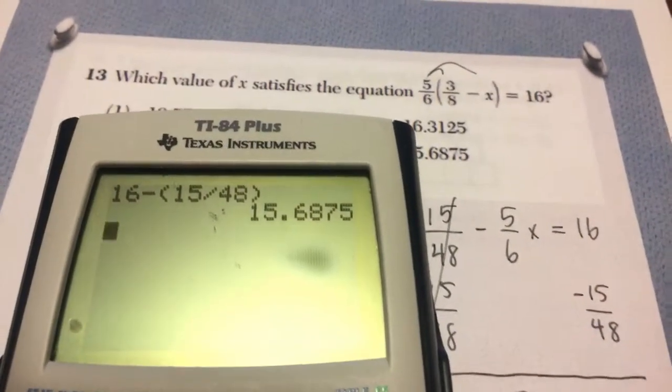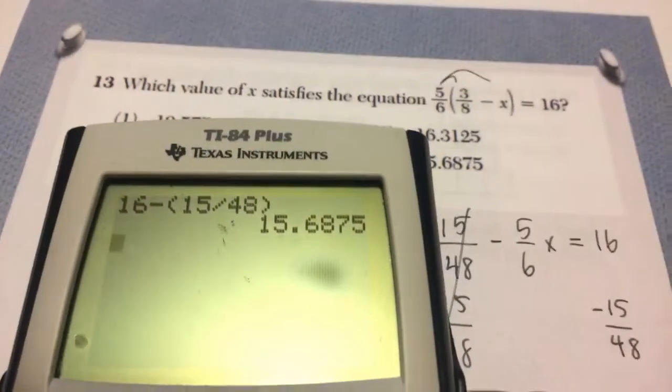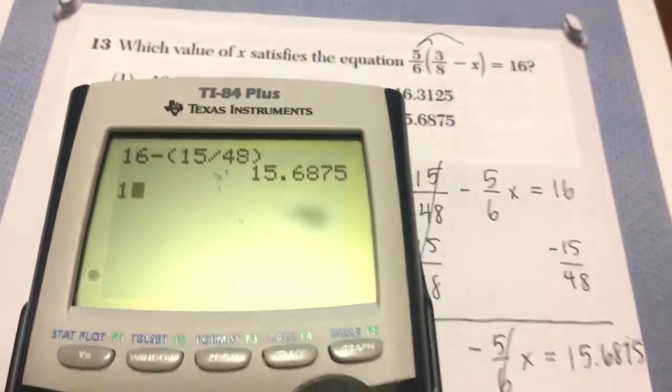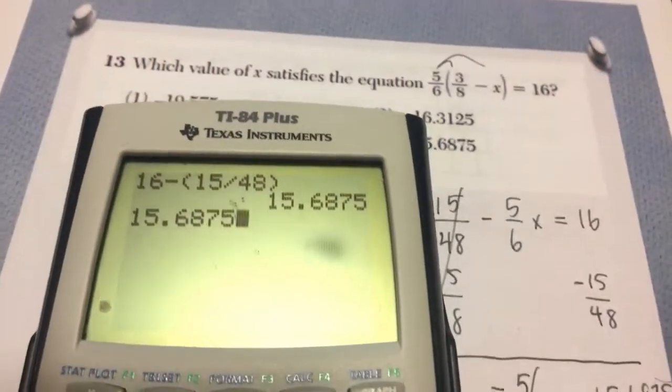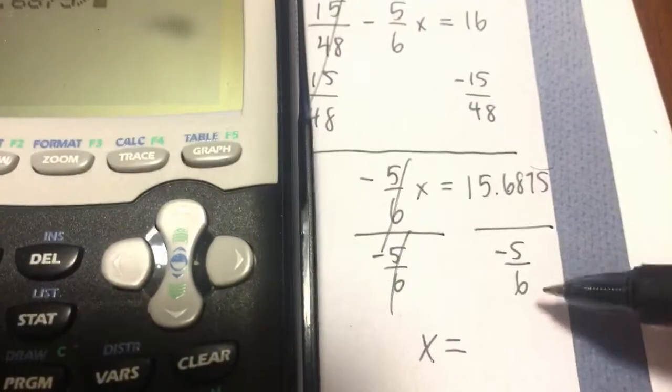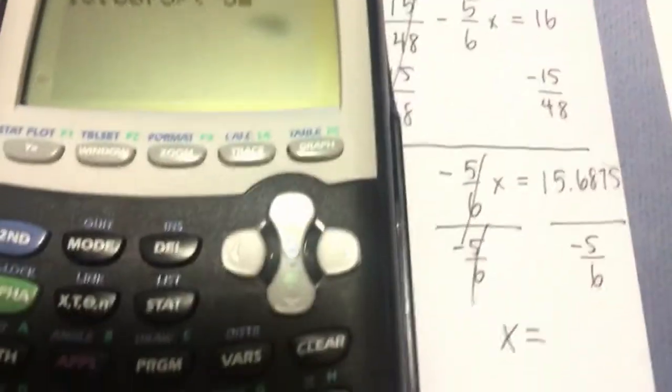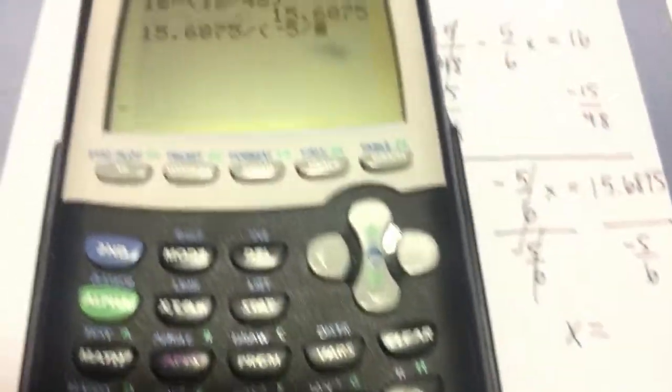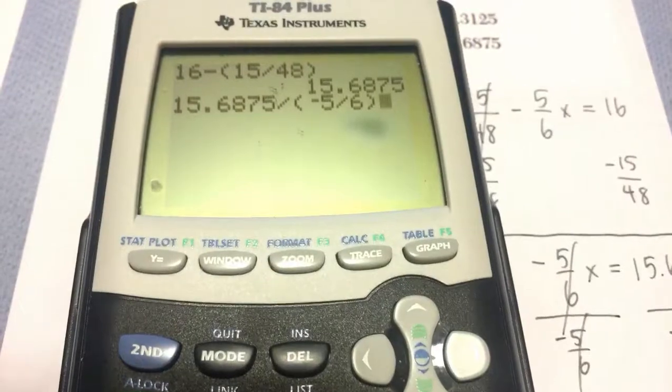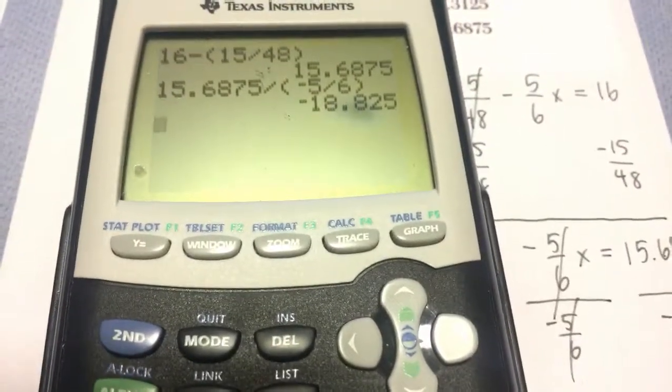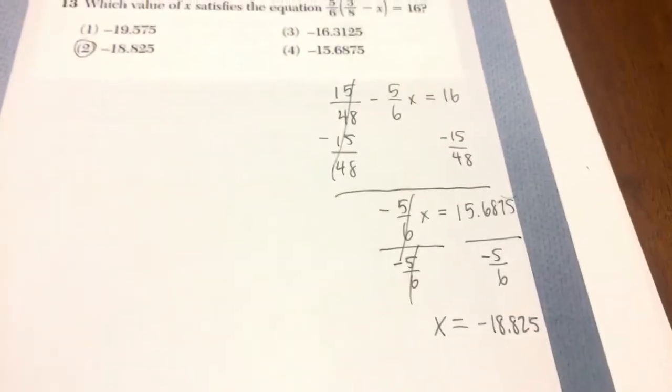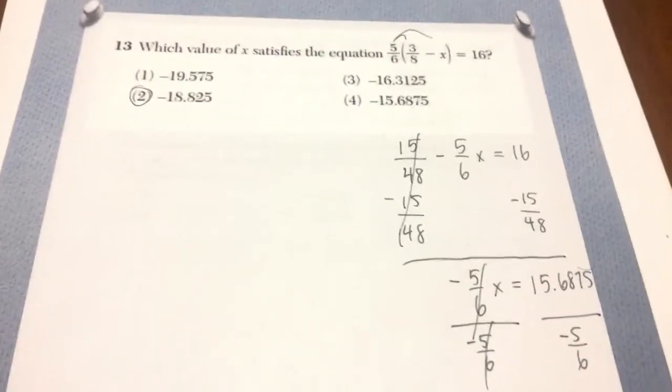Now again, if I divide by negative 5/6, I don't recommend this strategy but it is what it is. So are you ready? 15.6875 divided by, now I need to put this in parentheses. So I'm going to do parentheses, negative 5 divided by, you're using this button to do the fraction, it's just the division. And I get negative 18.825. This should be choice number 2. Feel free to use your calculator, but please put parentheses around your fractions.